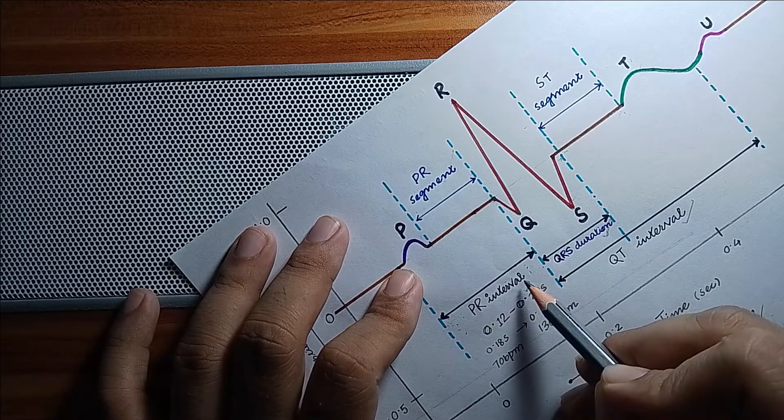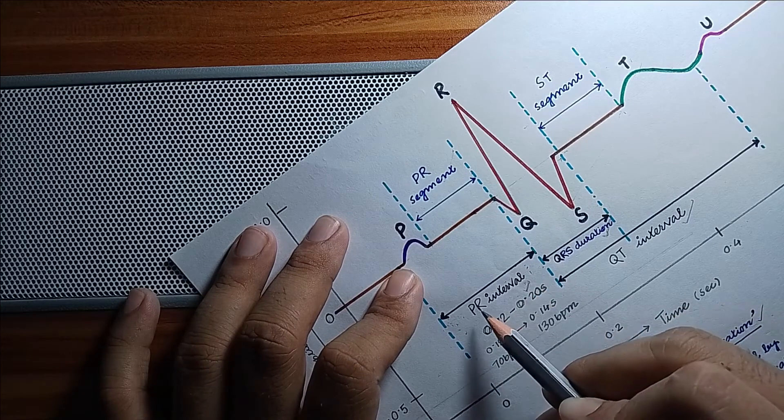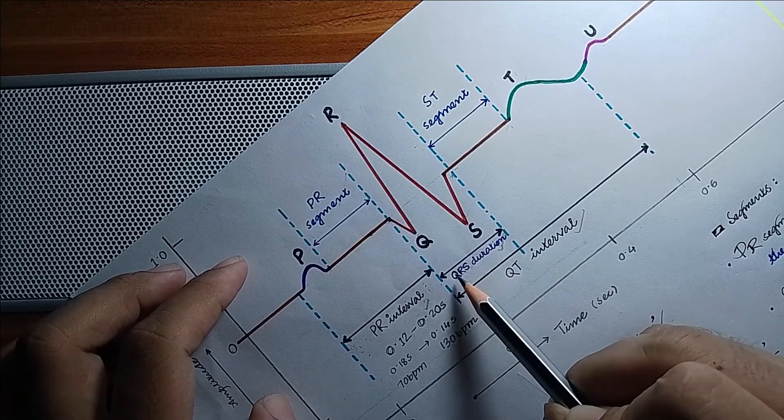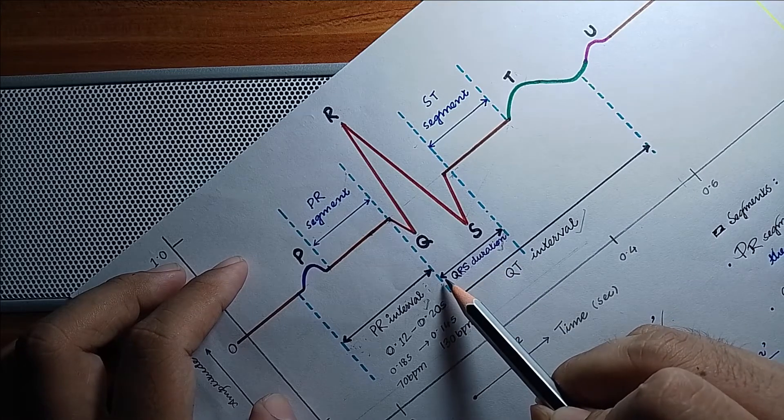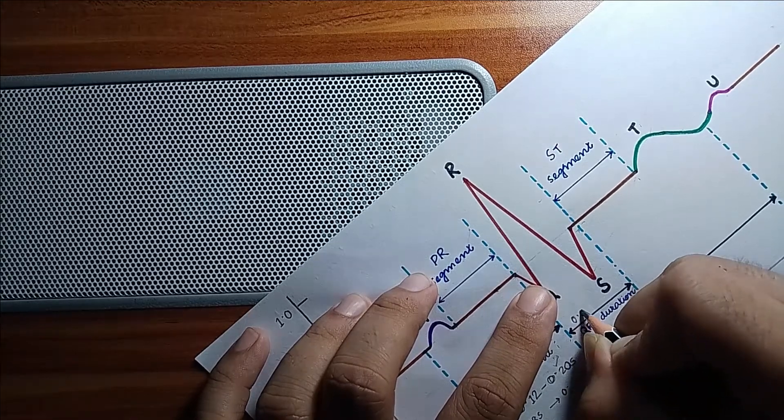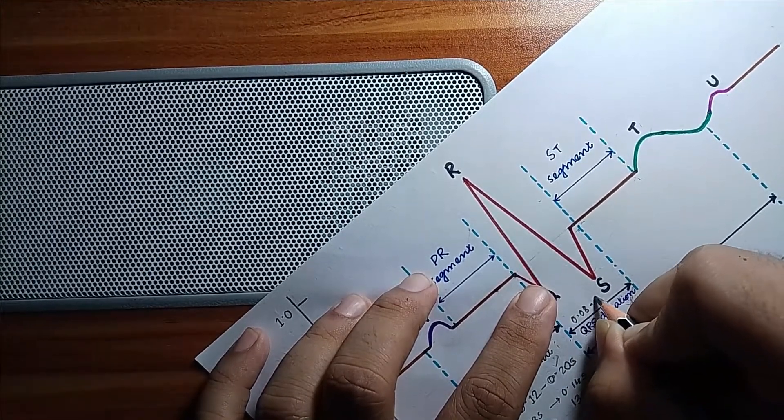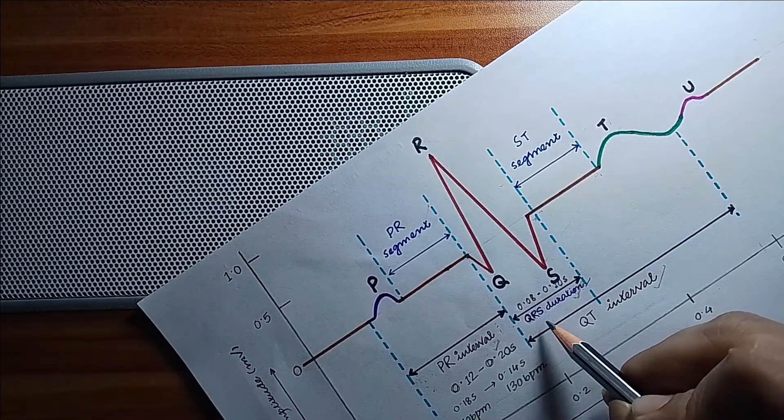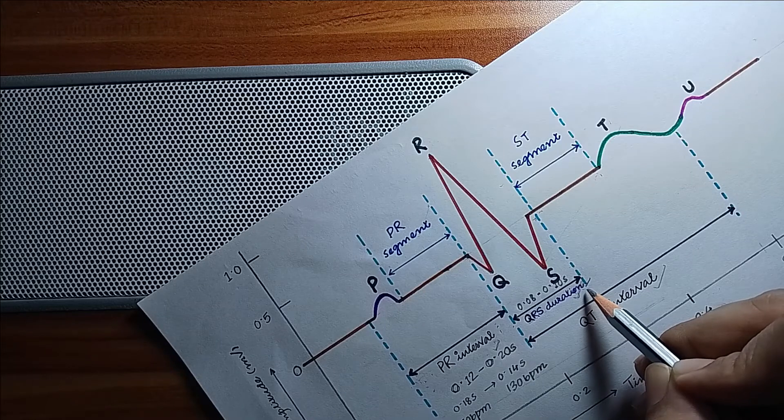Now the QRS interval, or QRS duration. This is the interval of the QRS complex. The normal range is 0.08 to 0.10 seconds. The significance of this QRS duration is it represents ventricular depolarization.